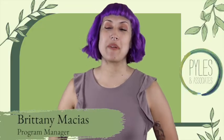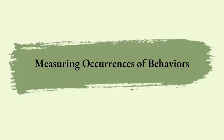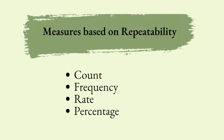Hi everybody, this is Brittany from Teach Me ABA, and today we're going to continue on our task list five series for those studying for the exam, or for anyone that's just curious about aspects within ABA therapy and services. For this video, we're going to talk about C-3: measuring occurrences of behaviors, specifically count, frequency, rate, and percentage.